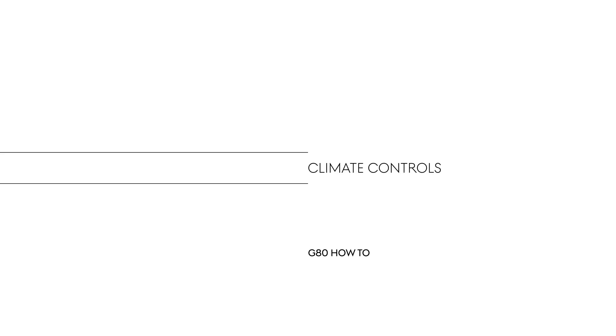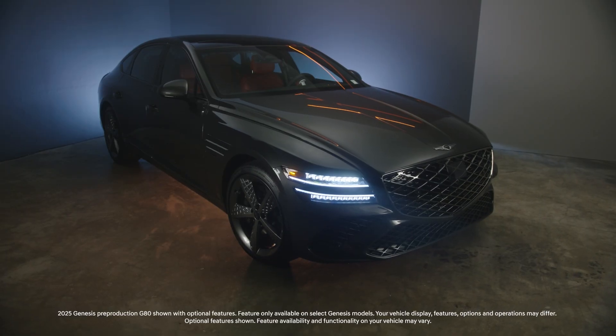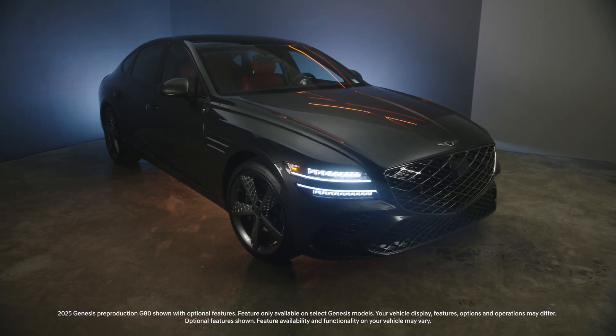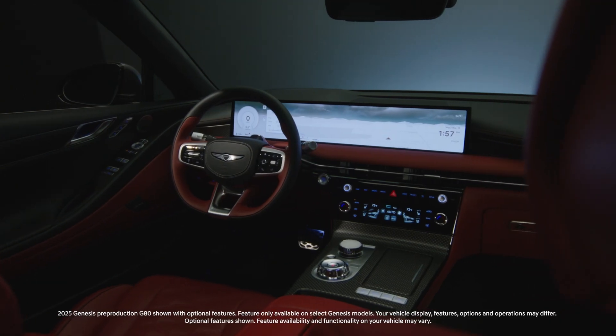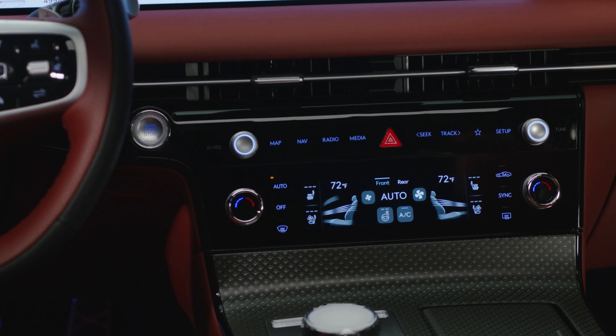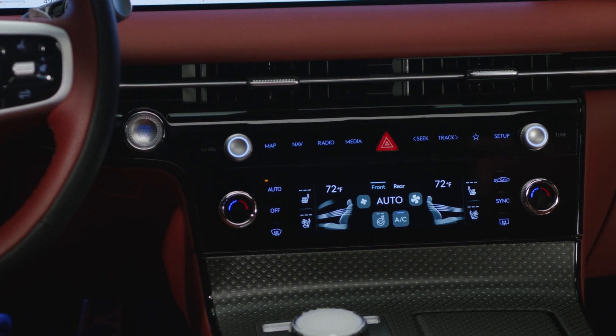This is the Genesis G80. The climate control system in your Genesis G80 can be adjusted using the haptic controls located in the center console.